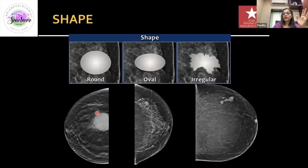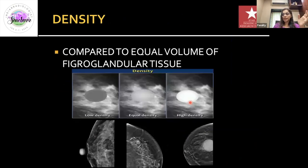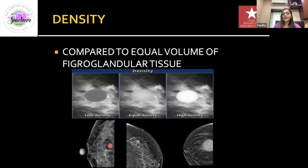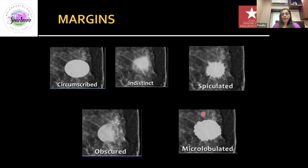The shape of the mass — I remember the mnemonic ROI: Round, Oval, and Irregular for anything that does not fall into the first two categories. Density of the mass is described in comparison with an equal amount of surrounding fibroglandular tissue. A mass can be fat-density (lower), equal in density, or higher in density compared to the surrounding glandular tissue.